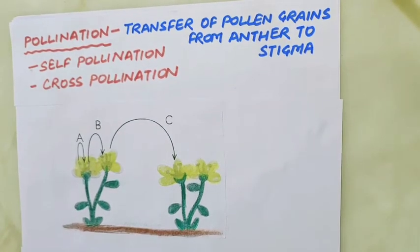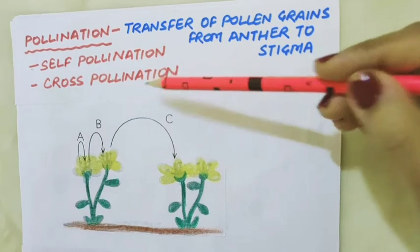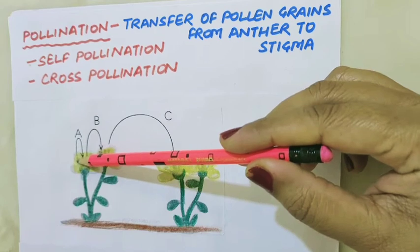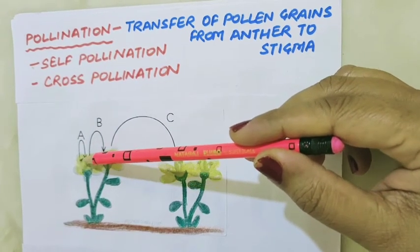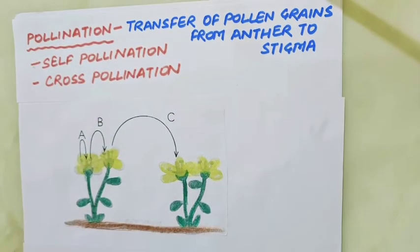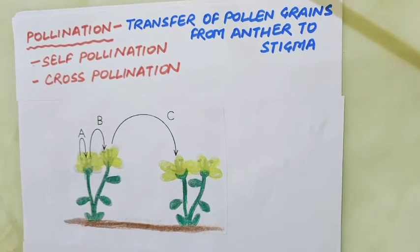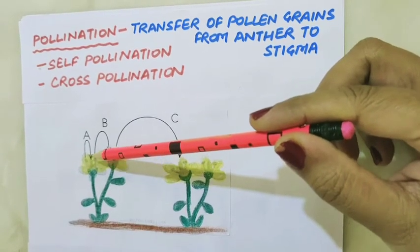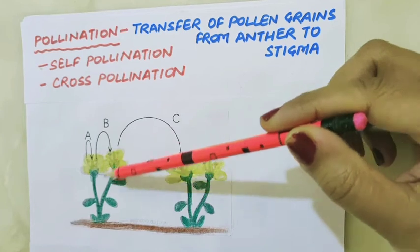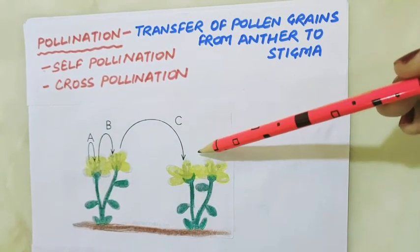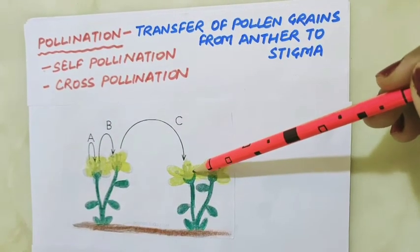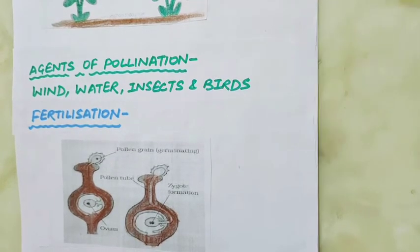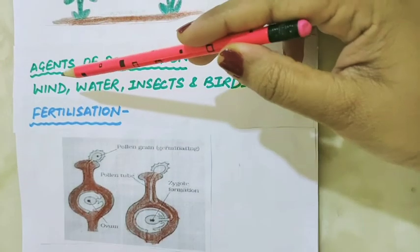Pollination takes place in two different ways: self-pollination and cross-pollination. When pollen grains from the anther of one flower reach the stigma of the same flower, it is called self-pollination, which occurs in bisexual flowers. When pollen grains from the anther of a flower are transferred to the stigma of a flower on the same or a different plant of the same kind, it is called cross-pollination. Pollination is carried out by external agencies like wind, water, insects, and birds, which are called agents of pollination.